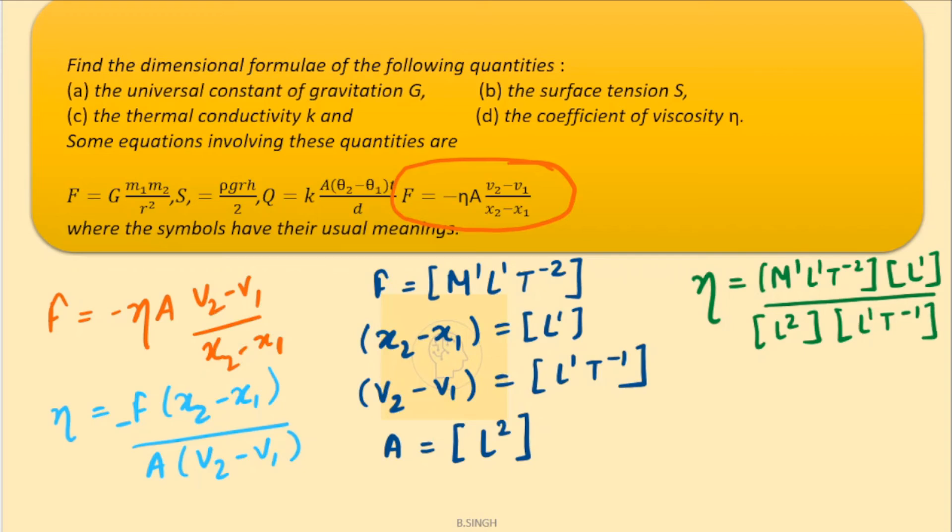Let us now simplify this. So, M has only one parameter. So, it is simply M1. L this one and this one will cancel out with L2 and we are left with only L1 in the denominator.